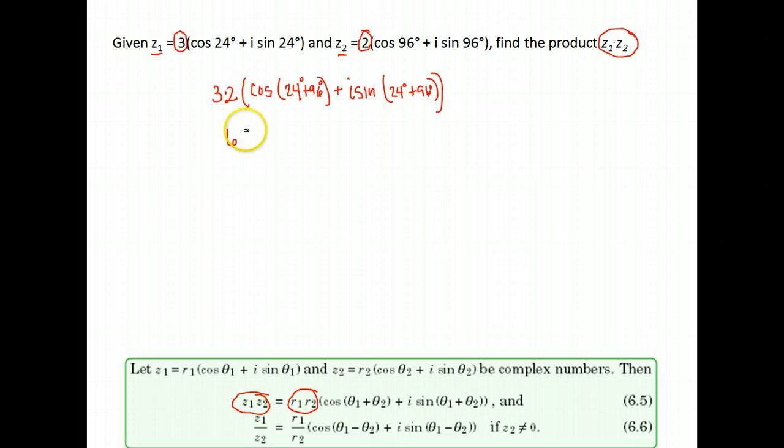2 times 3 is 6 and then we have the cosine of 24 plus 96 is 120 degrees, plus i sine 120 degrees.